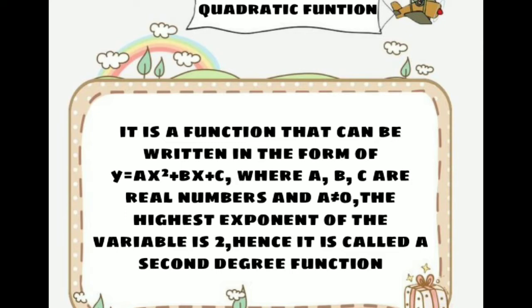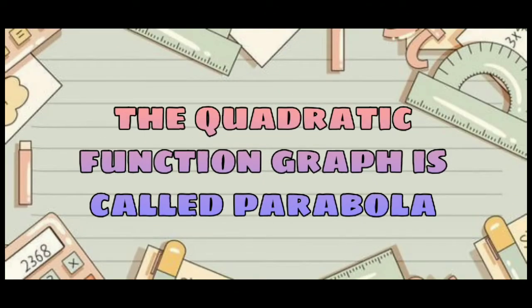The highest exponent of the variable is 2, hence it is called a second-degree function. Remember that a is not equal to zero because if a becomes zero, it will no longer be a quadratic function—it will become a linear function. Another way to identify a quadratic function is to look at its exponent. The quadratic function has a highest exponent of 2, and the graph of a quadratic function is called a parabola.